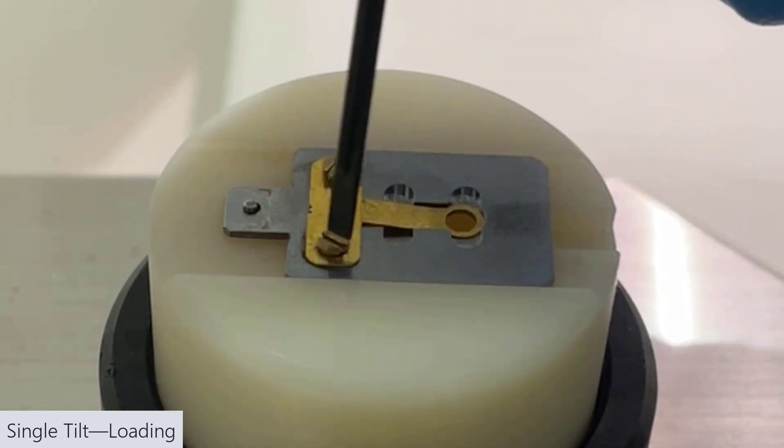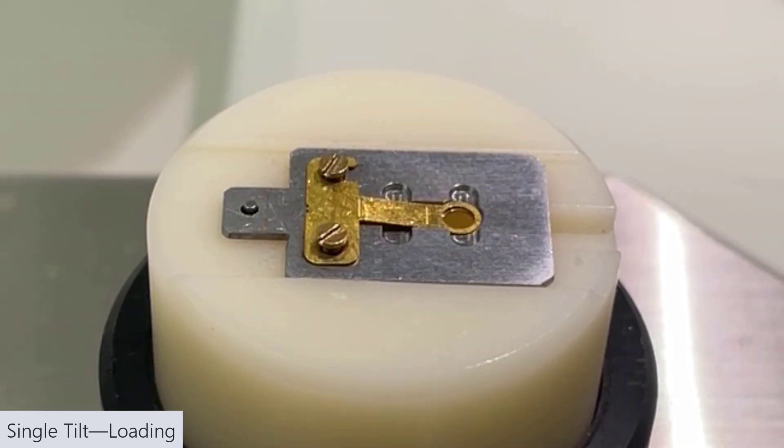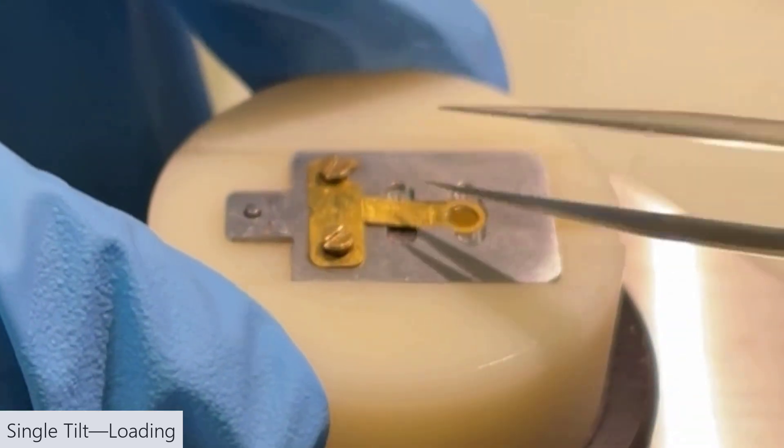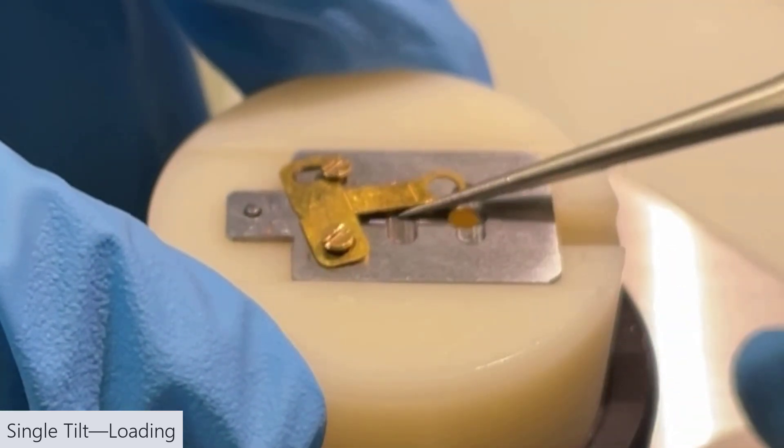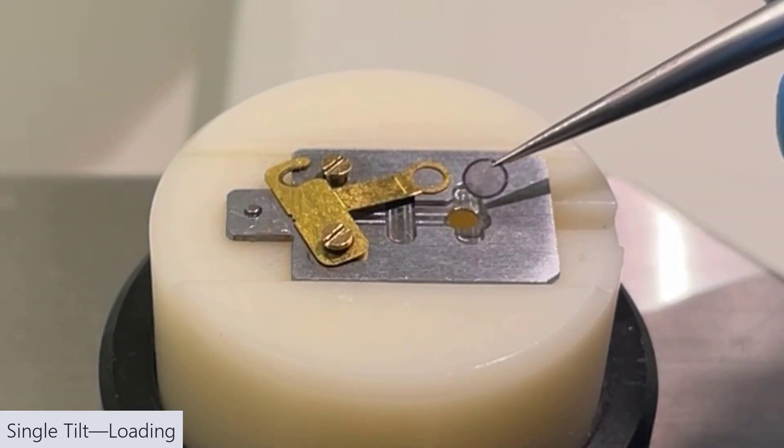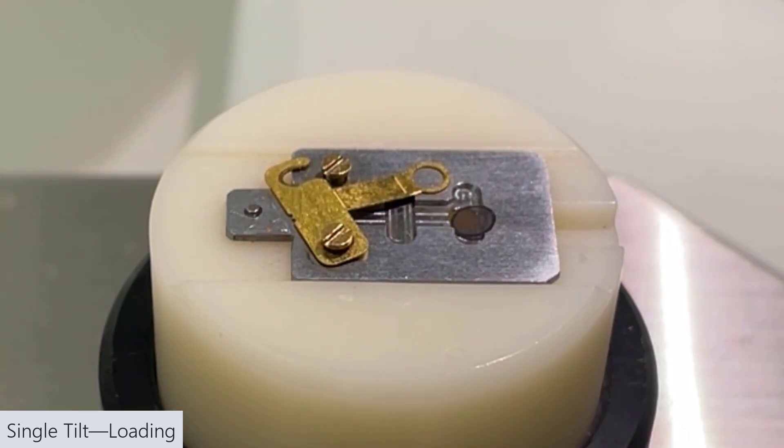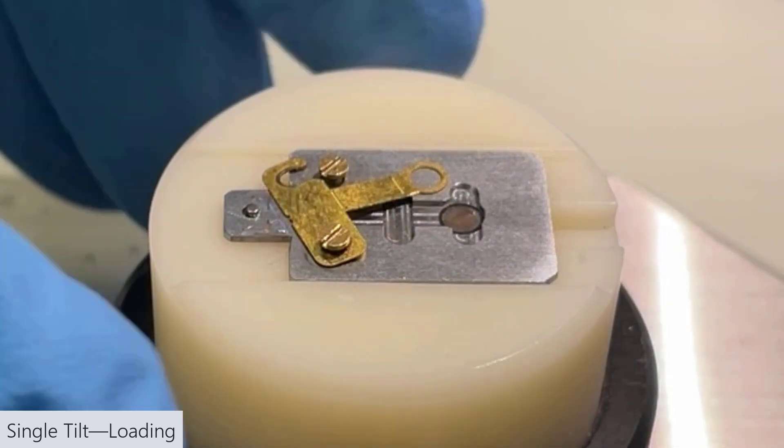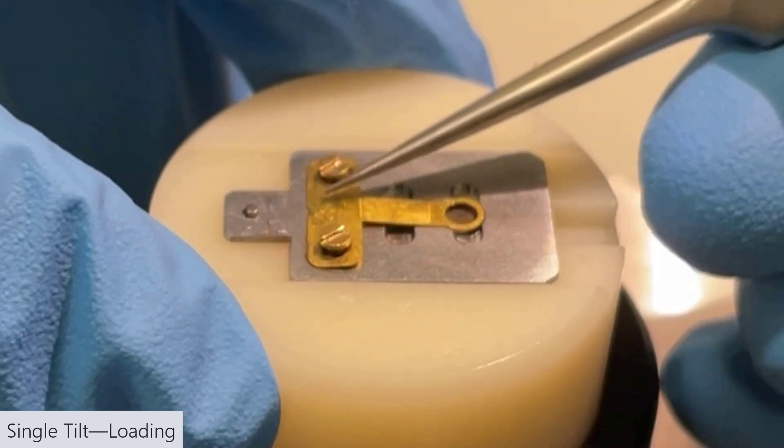Unscrew the screws. Then use tweezers to move the metal piece out of the way, just swing it to the side so that the hole isn't obstructed. Drop your grid in, whether a mesh grid or a FIB section grid, and then move the metal plate back in place.